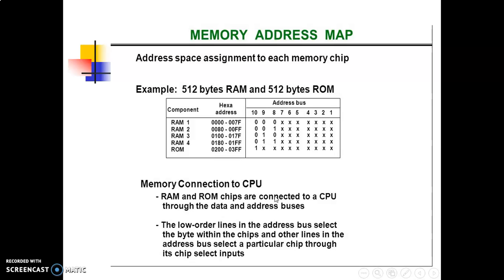The small x values are always assigned to the lower order bus lines: lines 1 through 7 for the RAM and lines 1 through 9 for the ROM. It is necessary to distinguish between four RAM chips by assigning each a different address. For this particular example, bus lines 8 and 9 represent four distinct binary combinations. The equivalent hexadecimal address for each chip is obtained from the information under the bus assignment.